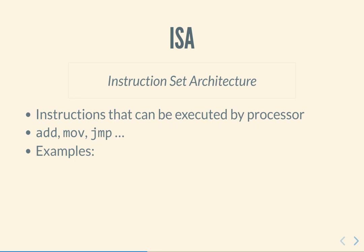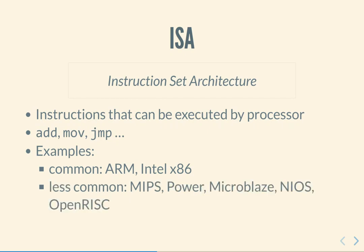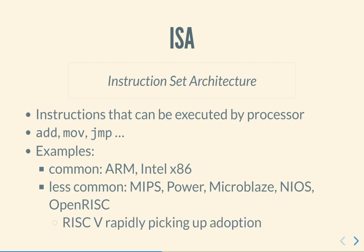Examples of instruction set architectures — the most common ones you are likely to have heard of are probably the ARM architecture, the ARM ISA, and Intel x86. There are less common ones: MIPS, the Power series from IBM, MicroBlaze from Xilinx, the NIOS from Altera, and OpenRISC which is an open processor design. Nowadays the RISC-V architecture is rapidly picking up adoption and lots of people seem to be considering that as the basis for SOC designs.